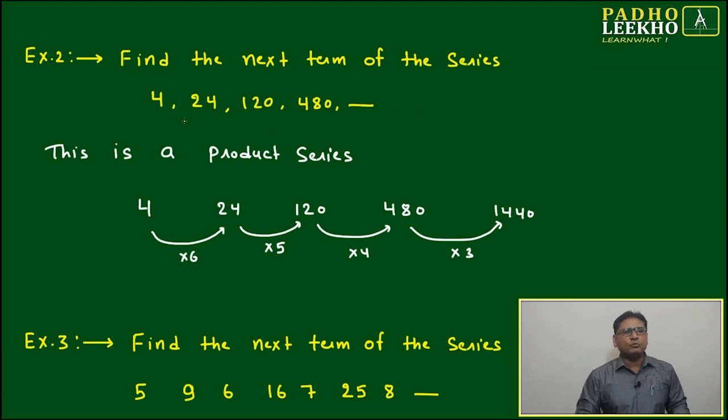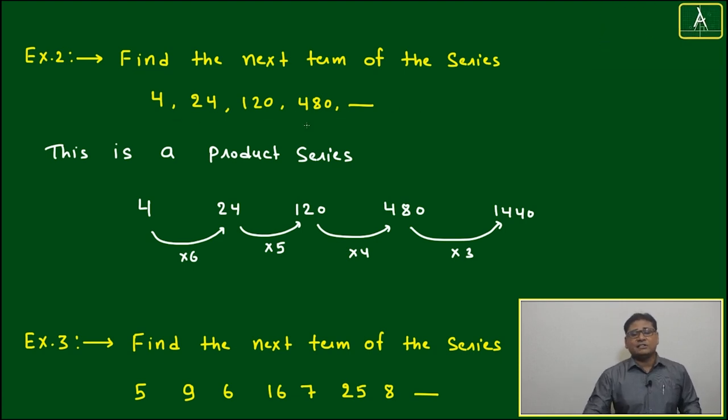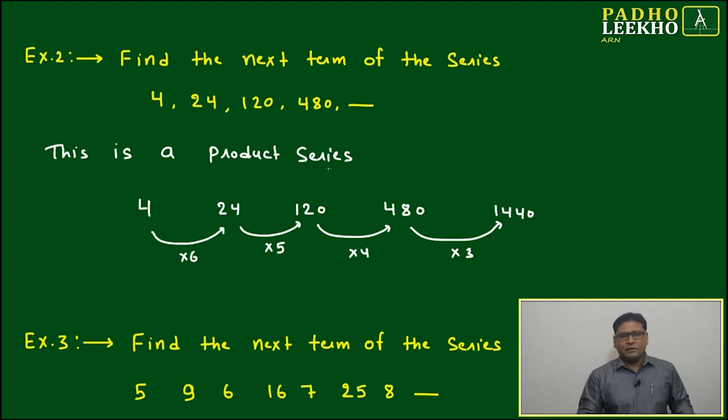Next term of the series: 4, 24, 120, 480. Again, this is kind of a bouncer. Starting with 4, suddenly it's coming to 24, then 120. We're not able to guess what is happening here.